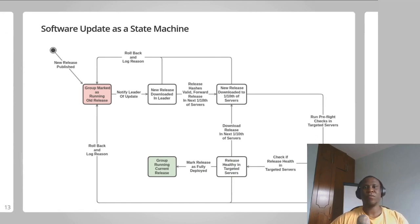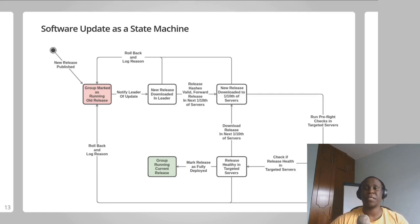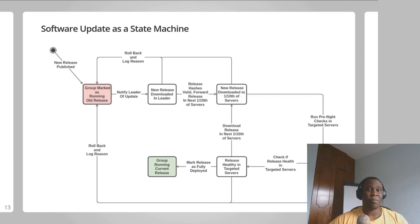It turns out representing the software deployment process as a state machine isn't too hard. The state machine diagram on this slide shows a hypothetical complex deployment process that involves cryptographic verification of an update, then rolling the update to a tenth of the servers in a group at a time, and running pre-flight checks after the update is applied on a server. If any of these steps fail, the group begins the process of rolling back to the previous software release. Now that the deployment process is represented as a state machine, how does the coordination actually work using Raft?